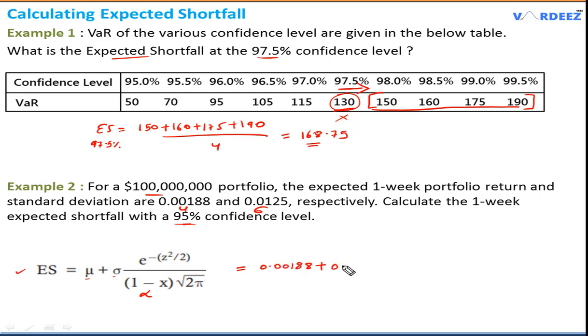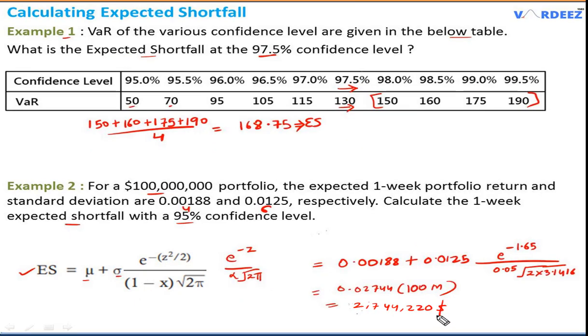Let's solve this. We start with the mean μ, add the standard deviation with adjustments. For 95% confidence level, we have 5% significance level, and the z-score for one tail is 1.65. We calculate e^(-z²/2), where z² = 1.65² divided by 2. The denominator has alpha 0.05 times √(2π) = 0.05 times 2.5066. We get 0.02744. To get the answer in dollar terms, we multiply by the 100 million dollar portfolio value for the final answer.